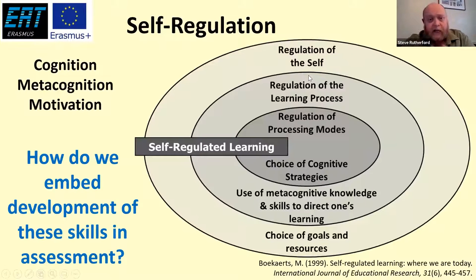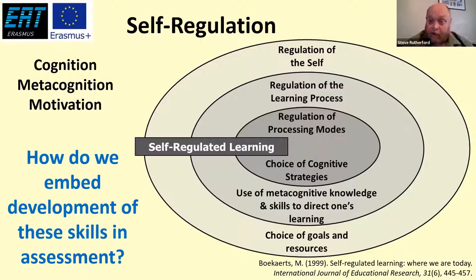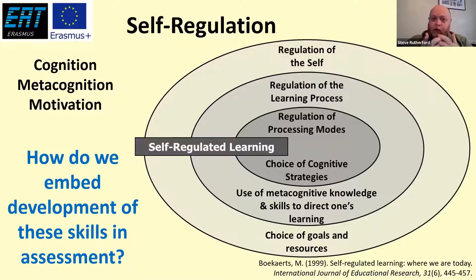What did I mean by self-regulation? Well, self-regulation has various different models. It tends to have three areas to it. So self-regulation is the ability to regulate your own work, to manage your own work independently. At the very core of it — this is a nice model I like by Monique Burkhardt — is being able to regulate your own way of learning, being able to learn effectively, being able to understand things and think about things: the cognitive strategies, if you like.